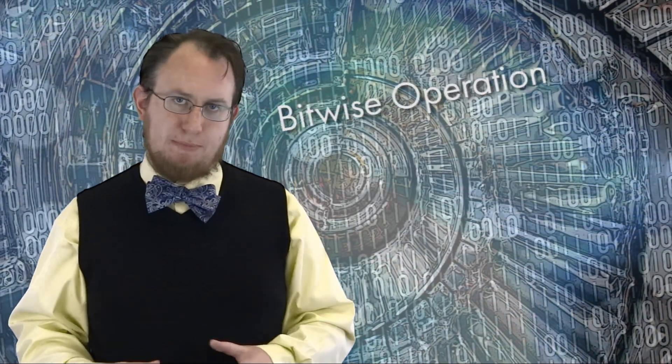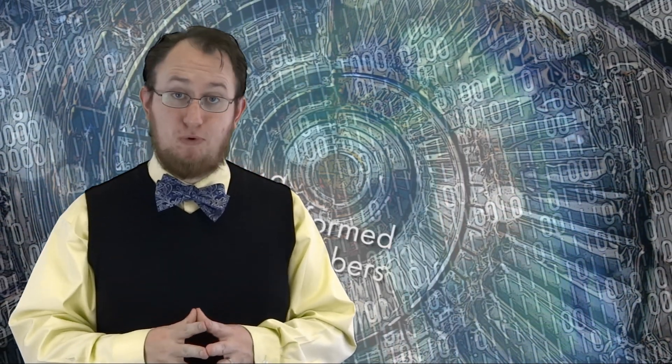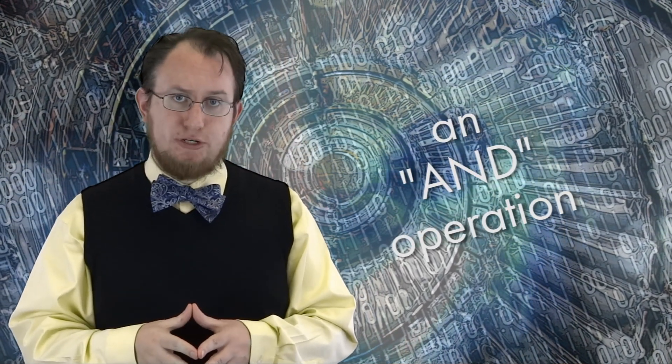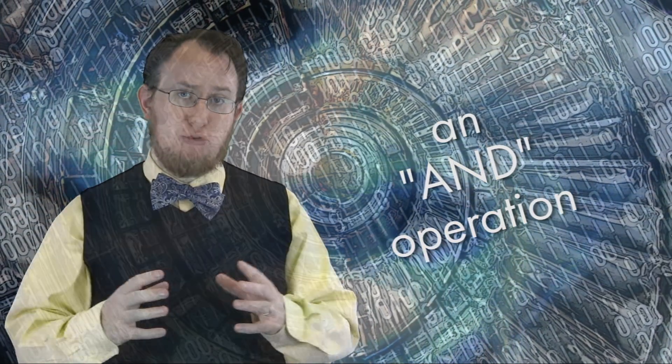When we send out a packet, we do what's called a bitwise operation. Now, a bitwise operation is essentially a function that we perform on two binary numbers, or bit patterns. In this case, we're doing an AND operation, which is when we take two equal length binary strings and multiply them by each other.